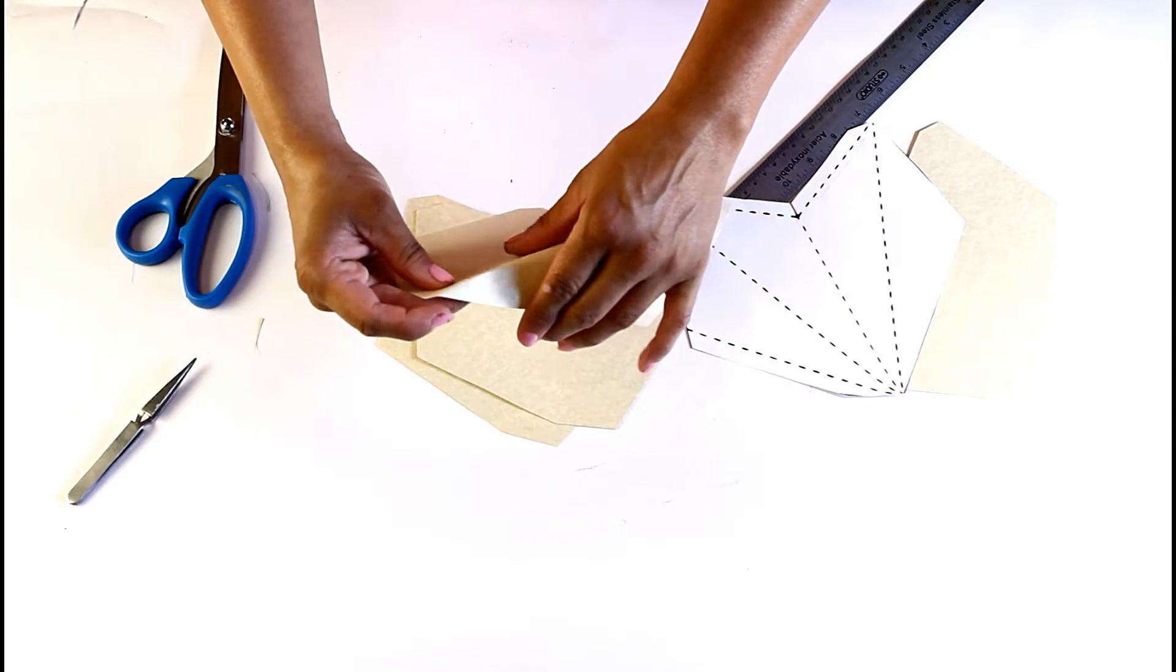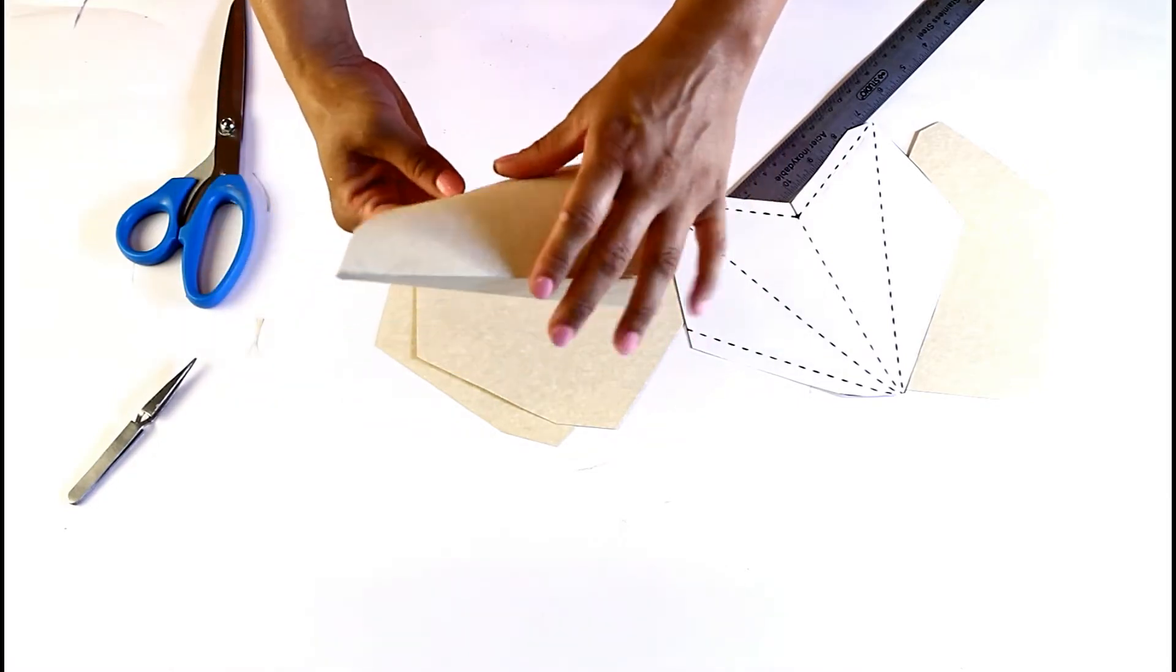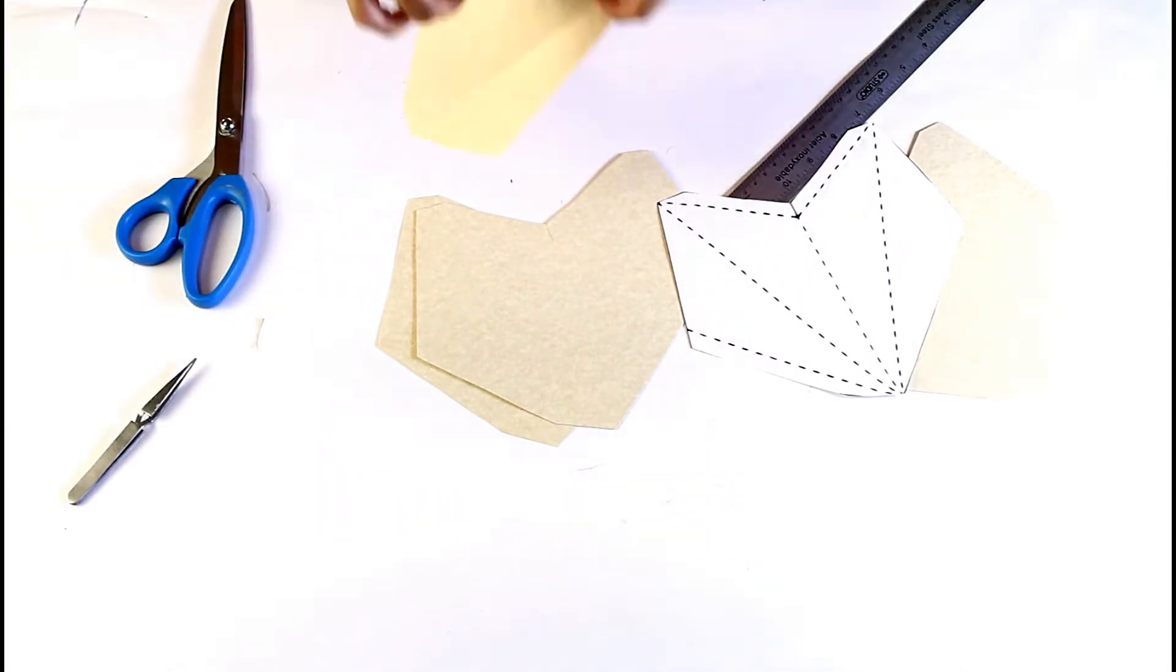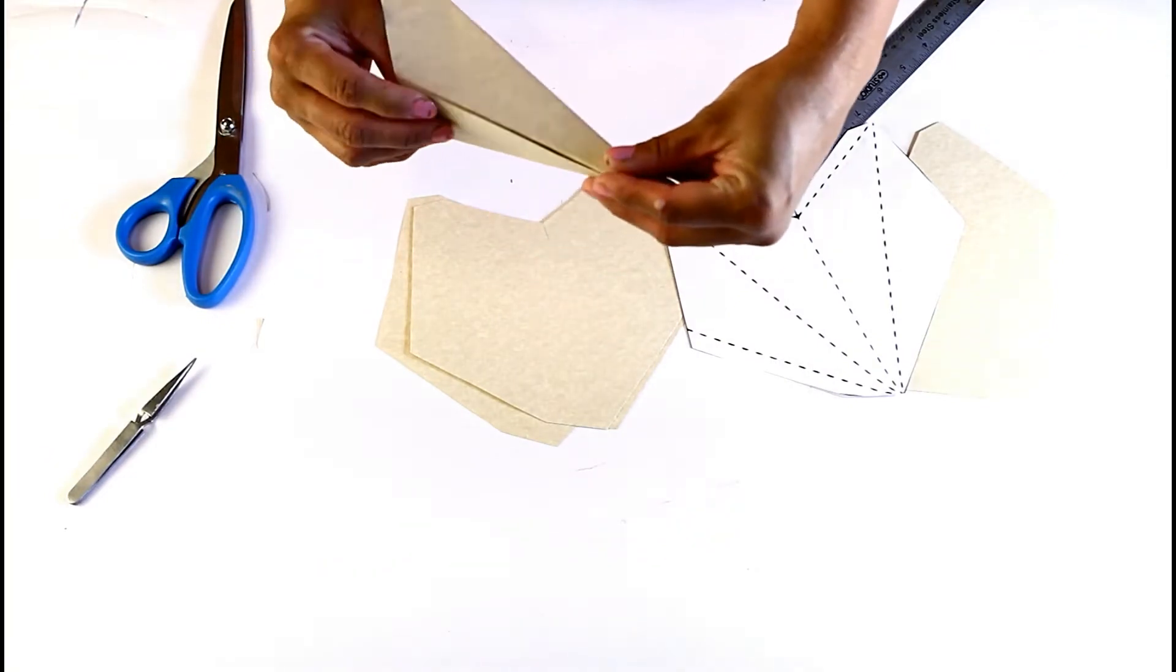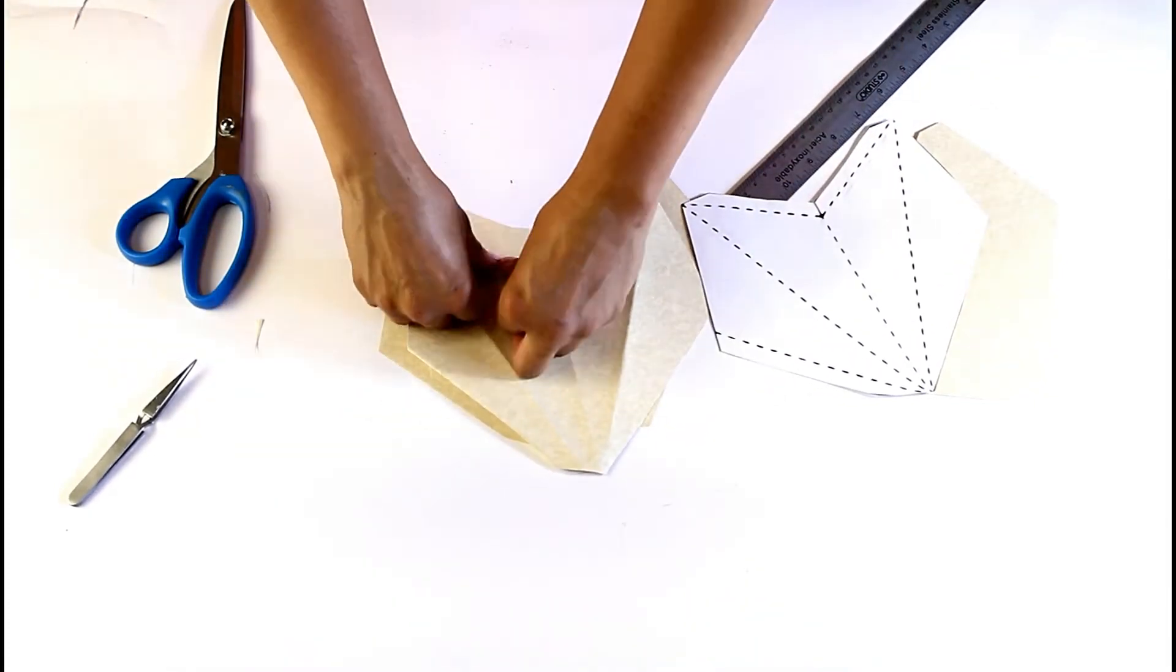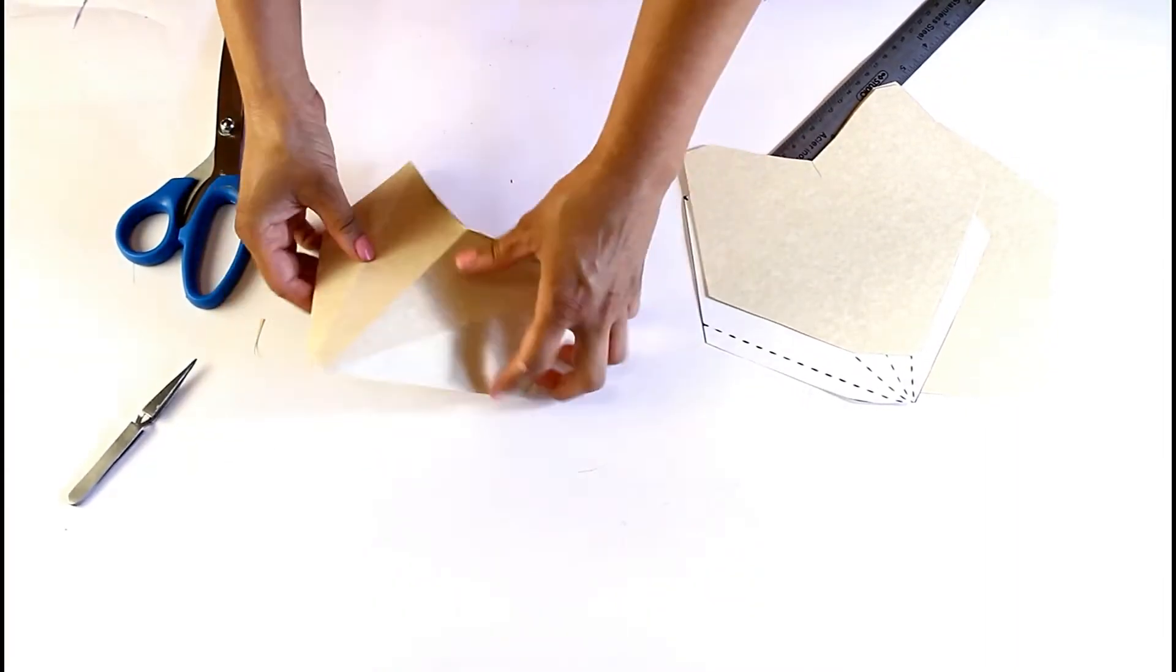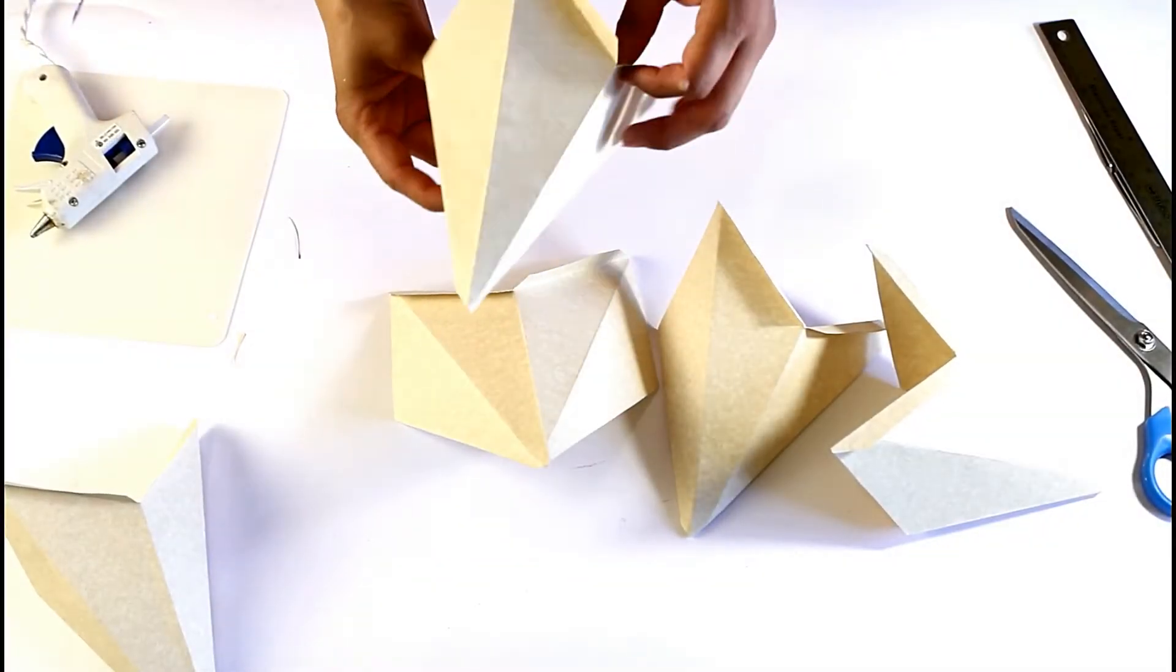Then I'm going to hot glue it here like this. These ones are going to fold upwards. These two are going to fold upwards, so the rest fold this way and these two fold upwards. So I have all five of my stars here.